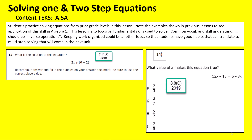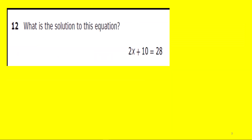Let's take a look at equation number 12. What is the solution? The process for two-step equations is to always undo the addition or subtraction first. Here we subtract 10 from both sides, cancel the two 10s, which leaves us with 2x equals 18. Then we divide both sides by 2, cancel the 2s, and our final answer is x equals 9. Always circle the final answer.